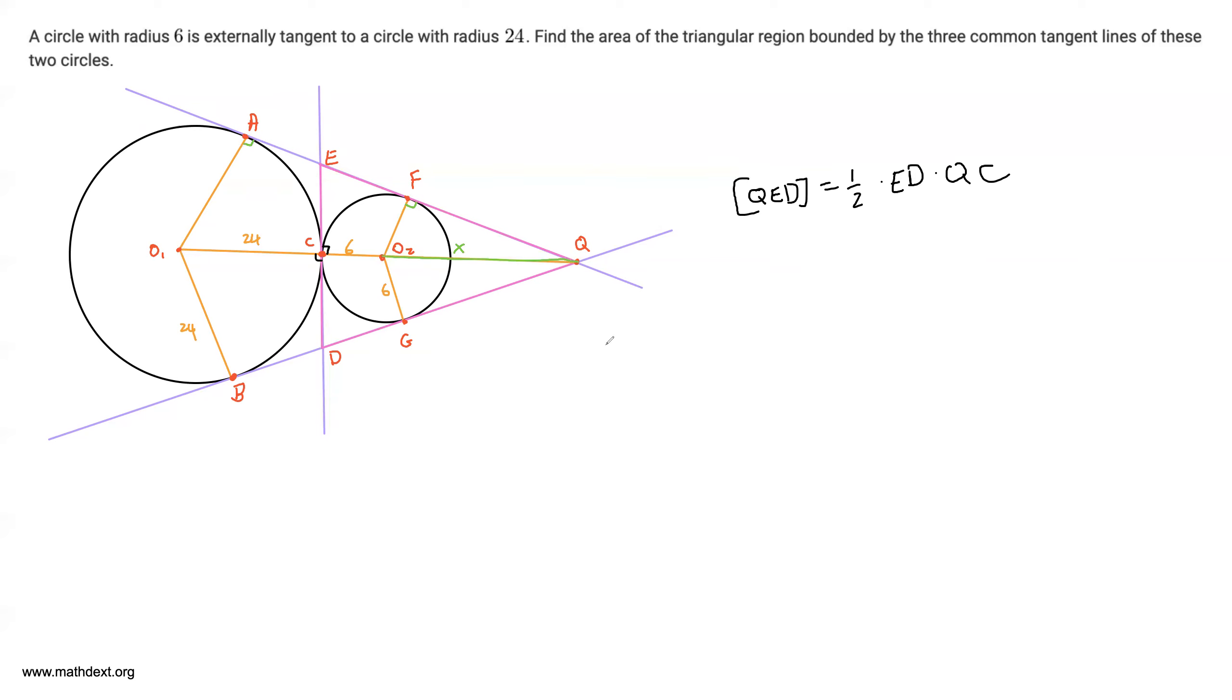And because of this, we have triangle QO2F, triangle QO2F is similar to triangle QO1A. By angle-angle similarity, both of those two angles are right that I've marked, and this angle is equal to itself on both of those triangles. So triangle QO2F and triangle QO1A are similar triangles. And because of this, what do we know? We know some similarity ratios.